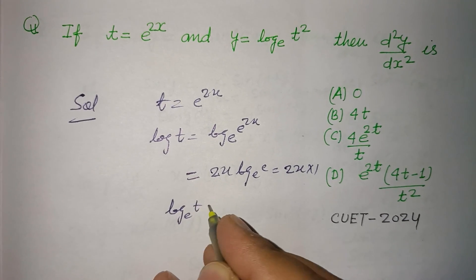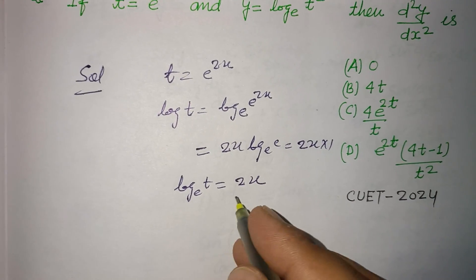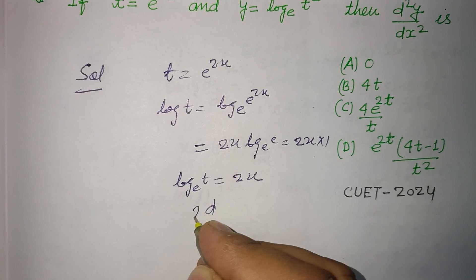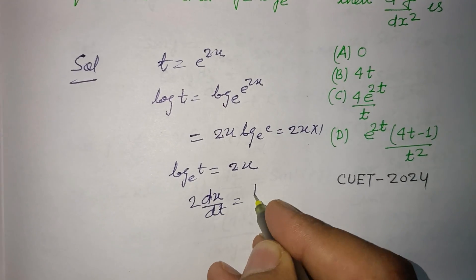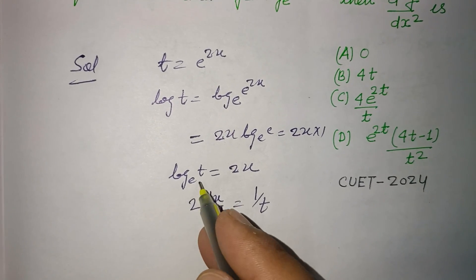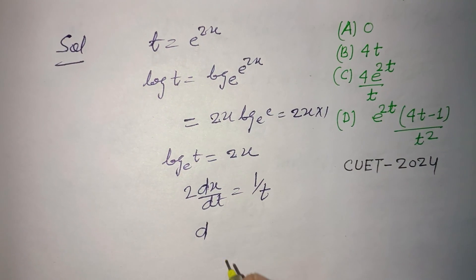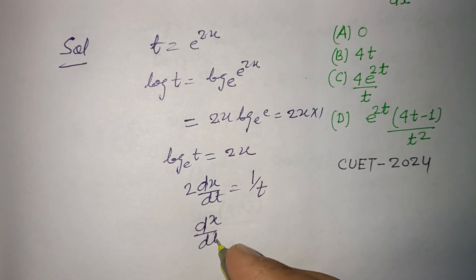So log base e of t equals 2x. Now differentiating this with respect to t: 2 dx over dt equals 1 upon t. The differentiation of log t is 1 upon t, so therefore dx upon dt equals